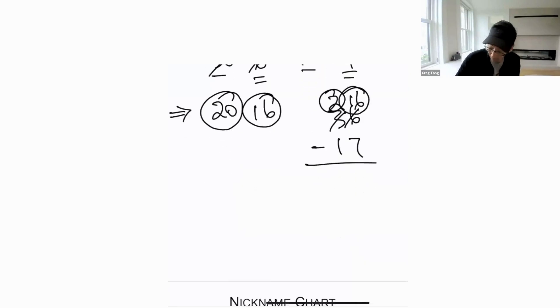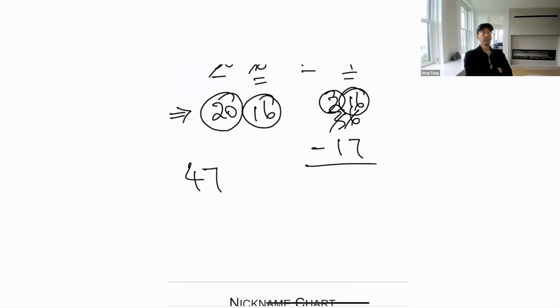Can you tell me quickly, funny number for 47? 30, 17. What's the funny number for 81? Expanded form, 80 and 1. Funny number, 70, 11. Funny number for 59. 40, 19.